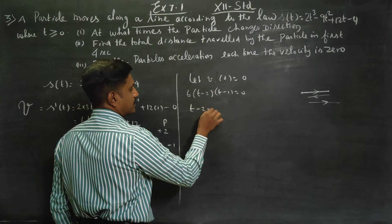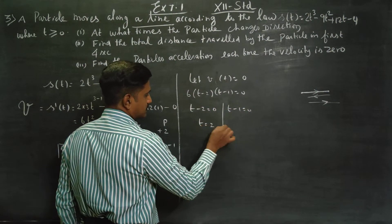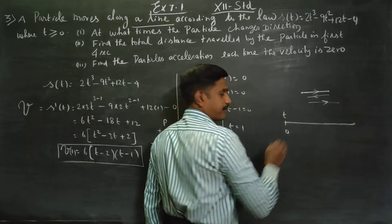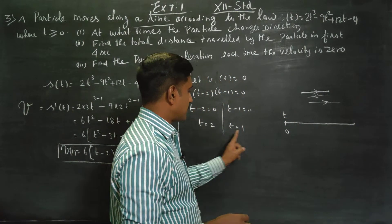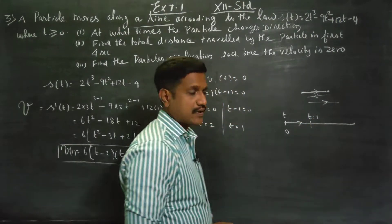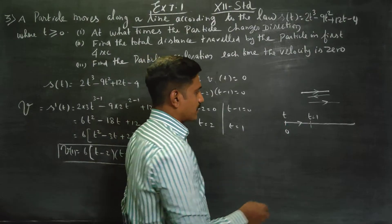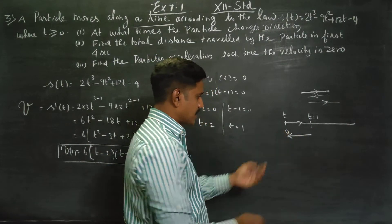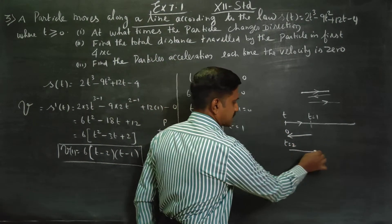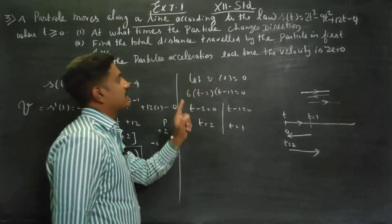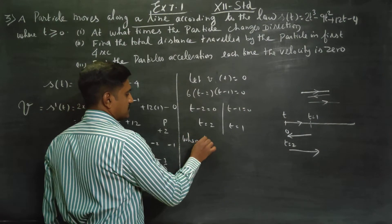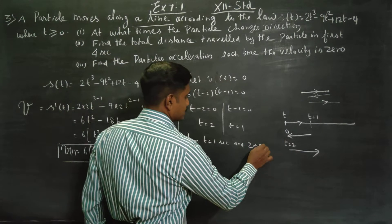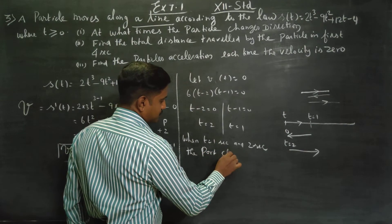Setting 6 into (t minus 2)(t minus 1) equal to zero: 6 is not zero, so t minus 2 equals 0 gives t equals 2, and t minus 1 equals 0 gives t equals 1. The particle starts at time zero. When t equals 1 second and t equals 2 seconds, the particle changes direction.